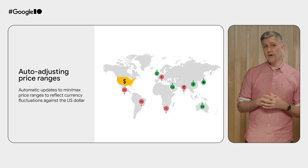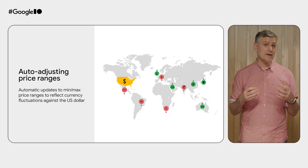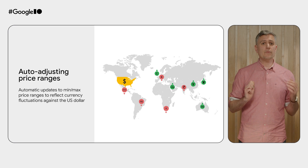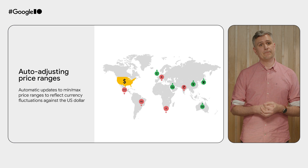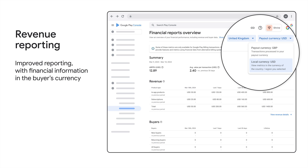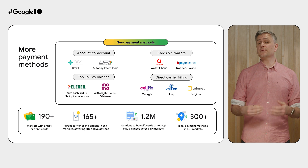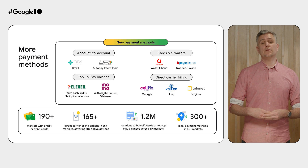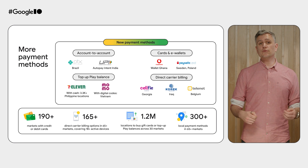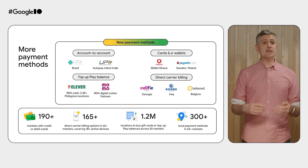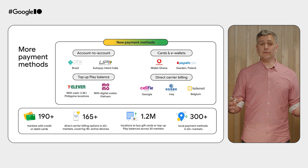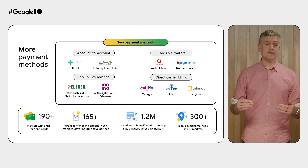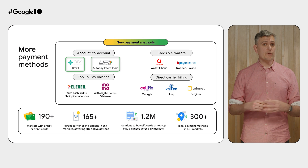We now automatically update price ranges to reflect currency fluctuations against the US dollar, so you'll see a new inbox notification anytime we recommend a price adjustment of your in-app products. We keep you in control and help mitigate arbitrage with notifications in Play Console and improved revenue reporting, allowing you to see financial information in the buyer's currency. Play continues to enhance payment coverage across both traditional forms of payment like credit cards, as well as new local payment methods and cash, including PIX in Brazil and UPI Autopay intent in India.